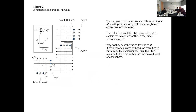One thing right away: they use the phrase 'acquisition of structured knowledge' with 'interleaved learning' — which is really their thing about how you have to train a deep learning network. Figure two is their picture of what the neocortex is like — they say the neocortex is like an artificial network. They basically propose the neocortex is like a multilayer ANN with point neurons, real-value weights and activations, and backprop. They show a target, the output of the circuit, fed back as backprop to train layer four, layer three, layer one.